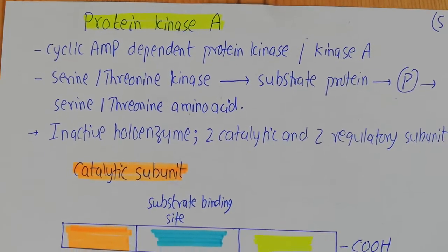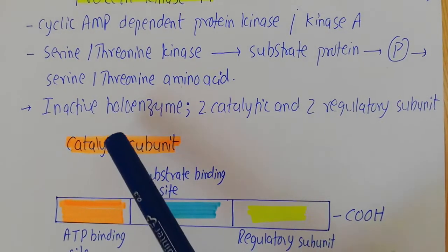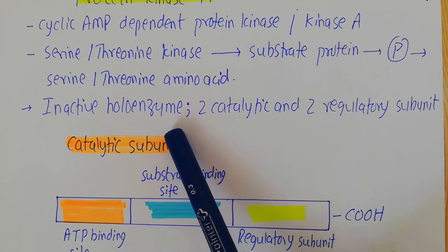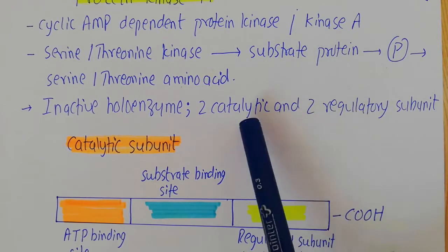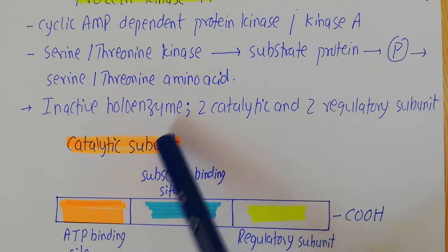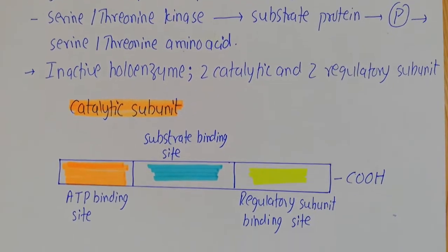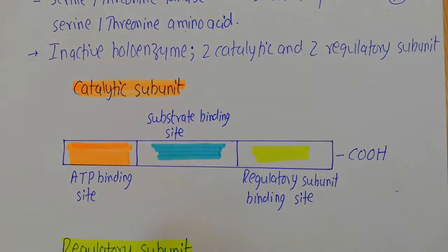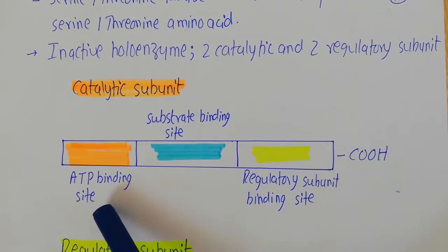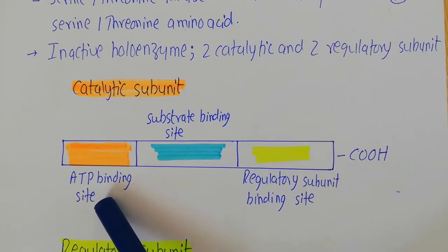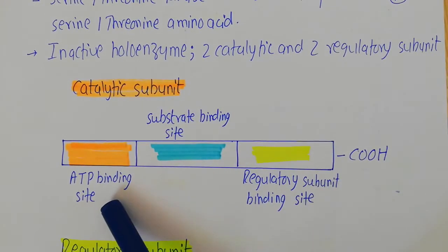If you talk about the inactive holoenzyme structure of protein kinase A, the inactive holoenzyme has two catalytic subunits and two regulatory subunits, and both of these together make the inactive holo protein kinase A enzyme. Looking into the details of the catalytic subunit, it has three important regions. One region is known as the ATP binding site - since it is a kinase, it must have an ATP binding site so it can convert ATP into ADP and add a phosphate group to its substrate protein.